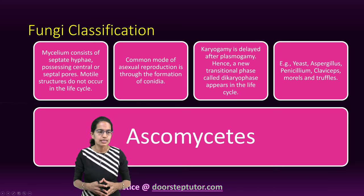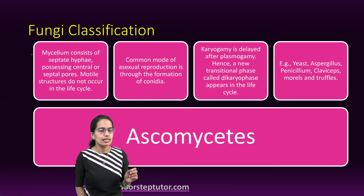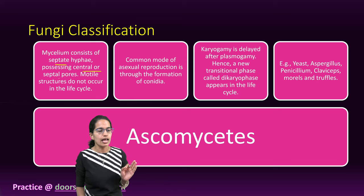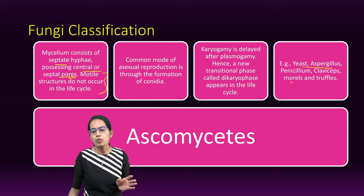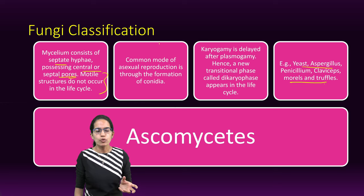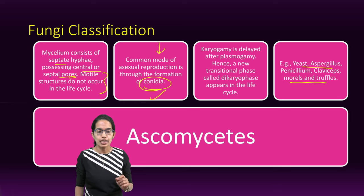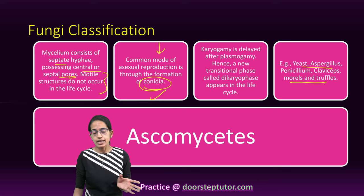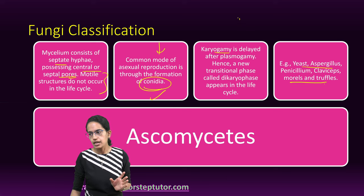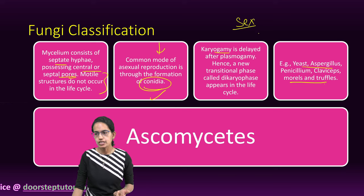The next is Ascomycetes. The mycelium is septate and has a central septal pore. Motile structures are not found throughout the life cycle. Examples are yeast, Aspergillus, morels, and truffles. The common mode of asexual reproduction is conidia formation. Karyogamy is delayed, and sexual reproduction occurs through sex cells, somatic cells, or gametangial contact.